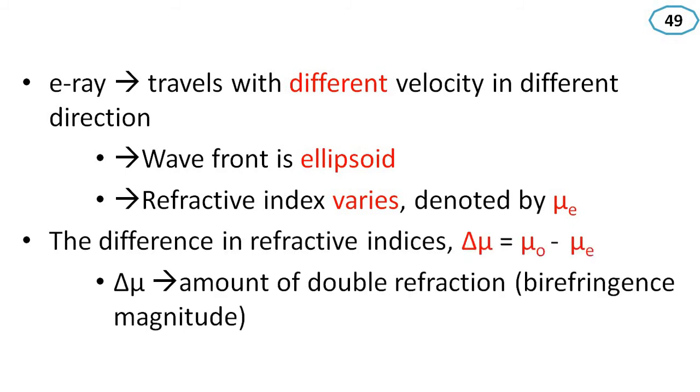The difference in refractive index, delta mu, is equal to mu-O minus mu-E.